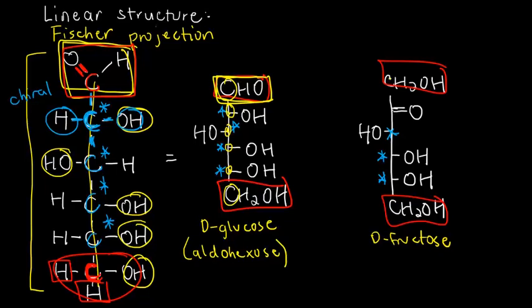Or for D-fructose, it's obviously a ketose. The carbonyl group is inside, so it's keto. And the number of carbons is one, two, three, four, five, six also. So, we can describe D-fructose as a ketohexose.